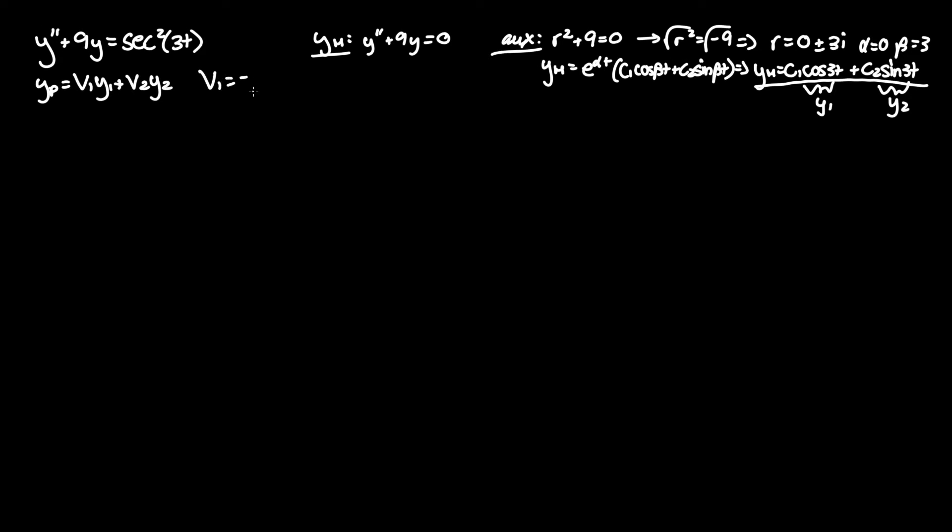So v1 equals negative integral of y2 f of t over Wronskian, where f of t is the right hand side. And v2 on the other hand equals integral of y1 f of t over Wronskian.